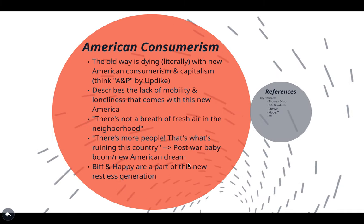Willie makes allusions to key references — he talks about how his sons might be 'late bloomers, like Thomas Edison or B.F. Goodrich.' He talks about the Chevy and the Model T, how dependable it was, and how he remembers those days. Everything is about the past, glorifying the past. And then we get pushed into a very interesting flashback, so keep that idea of the past versus the present in mind.